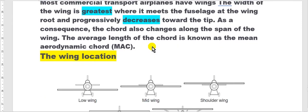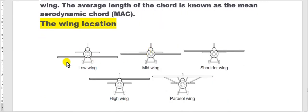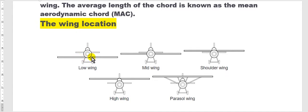The location of the wings: some aircraft have a low wing, here at the low of the fuselage; mid-wing, here at the mid of the fuselage; and high wing, up on the fuselage.